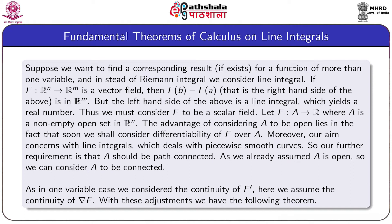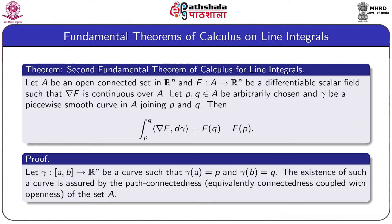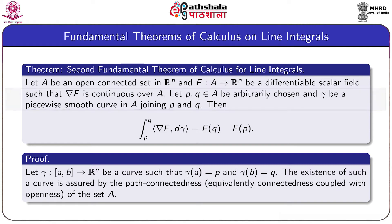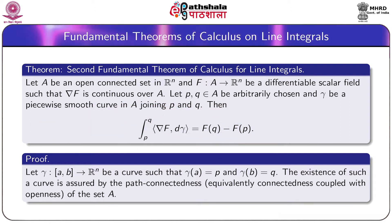With these adjustments we have the following theorem. Second Fundamental Theorem of Calculus for Line Integrals: Let capital A be an open connected set in R^n, and capital F from A to R be a differentiable scalar field such that the gradient of F is continuous over A. Let P and Q in A be arbitrarily chosen, and let gamma be a piecewise smooth curve in A joining P and Q. Then the line integral from P to Q of the inner product of grad F and d-gamma equals F(Q) minus F(P).